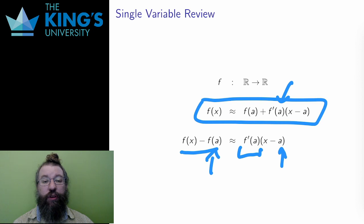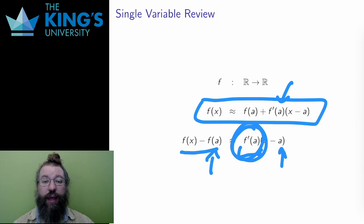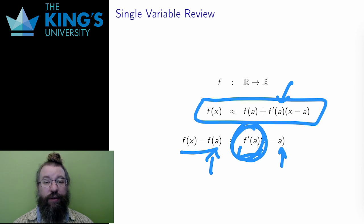This leads me to a new interpretation of the derivative. Instead of being the slope of the tangent line, the derivative is the multiplicative factor for the best approximation of f as multiplication by a constant, at least up to a shift. Multiplication by a constant is a linear operation, and this makes sense since the approximation is a line — the tangent line. After the shift, the multiplicative factor f prime of a is all I need to know.